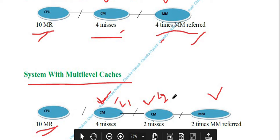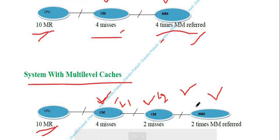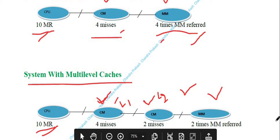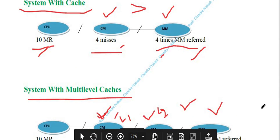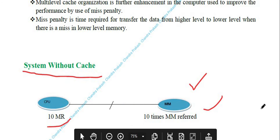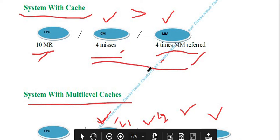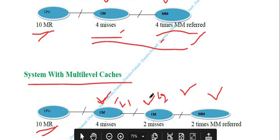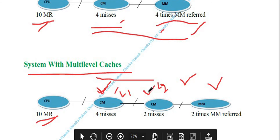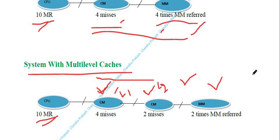We know that L1 cache is faster than L2 cache, and L2 cache is faster than main memory. So system performance is enhanced. Comparing the three configurations: in a system without cache, performance depends entirely on main memory; in a system with single cache, it depends on both cache and main memory; in a system with multiple caches (L1 and L2), performance is further enhanced.